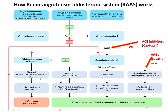One more important point: the RAS system works on a feedback mechanism. Red lines indicate that angiotensin 2, aldosterone, and elevated blood pressure inhibit the release of renin in normal situations. When this RAS system is not under control, elevation in blood pressure or hypertension is observed.